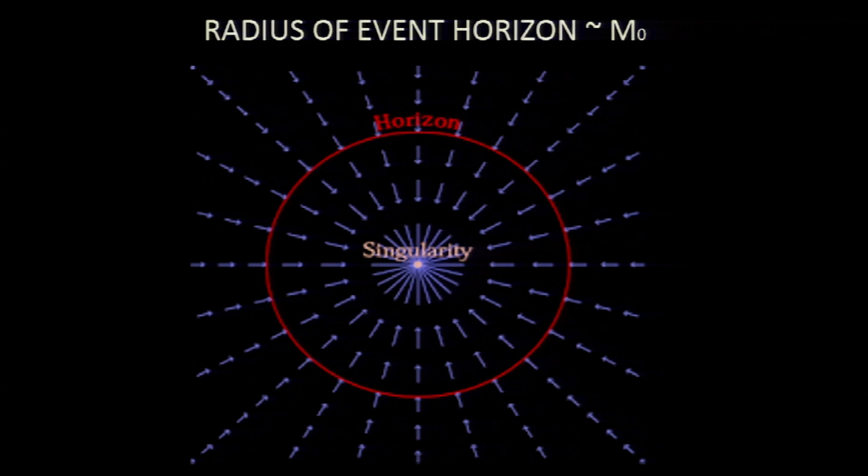This point mass has actually infinite density. There is a strong gravitational field around it. The red line you see is a point of no return — anything falling inside it cannot come out, not even light particles. This is called the event horizon, and the radius of this event horizon is called the Schwarzschild radius. The black hole paradigm is based on the assumption that the Schwarzschild radius is always finite.